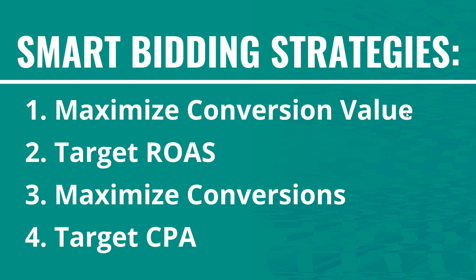Number one is maximize conversion value — exactly what it sounds like. Your bid strategy is telling Google to drive as much revenue as possible based on your targeting and your budget. Number two is target return on ad spend, which takes maximize conversion value and you actually set the target ROAS you'd like to meet. Generally you start with a minimum target and then optimize your campaigns to improve that return on ad spend over time.